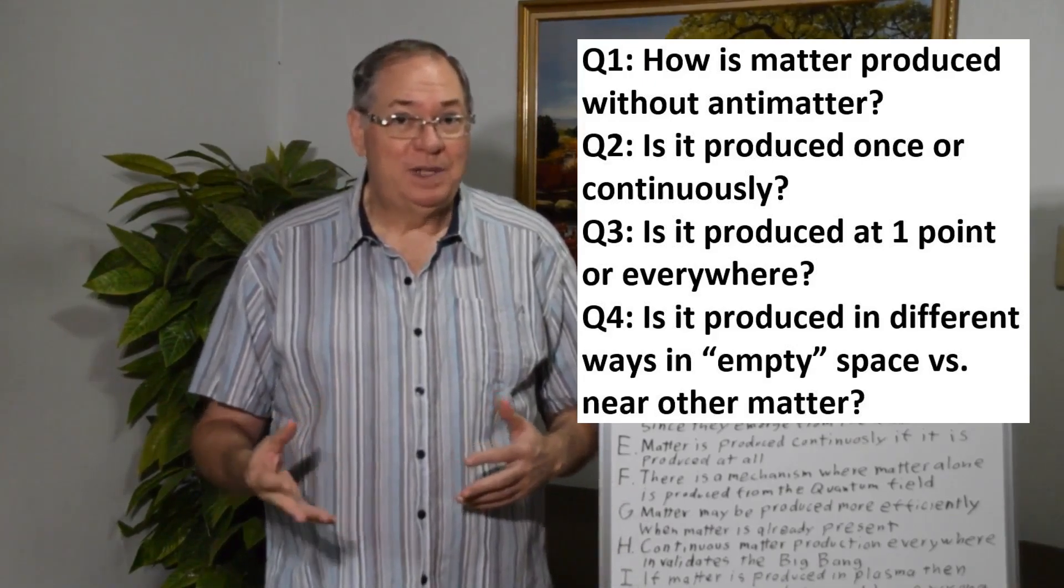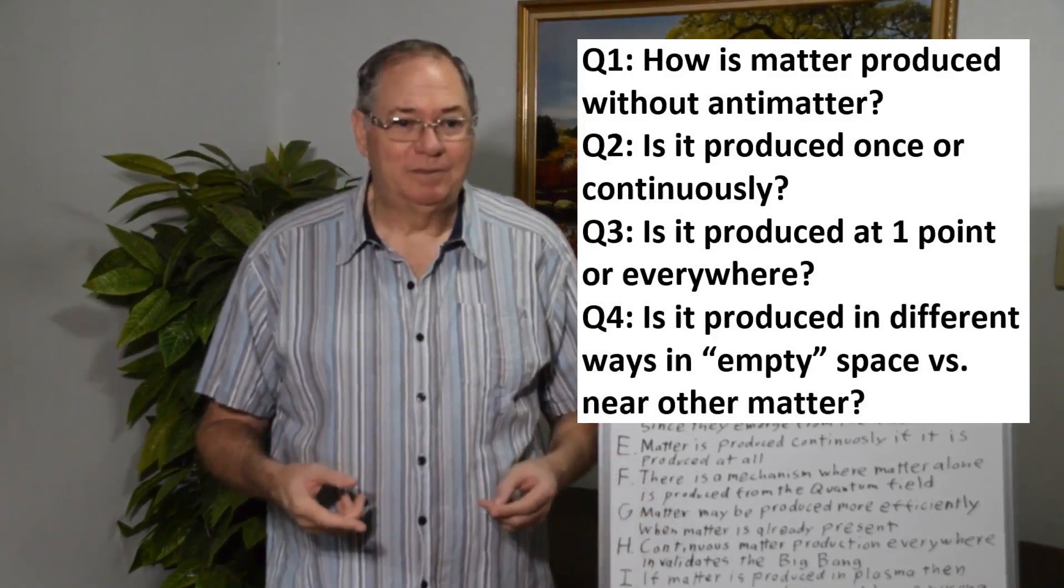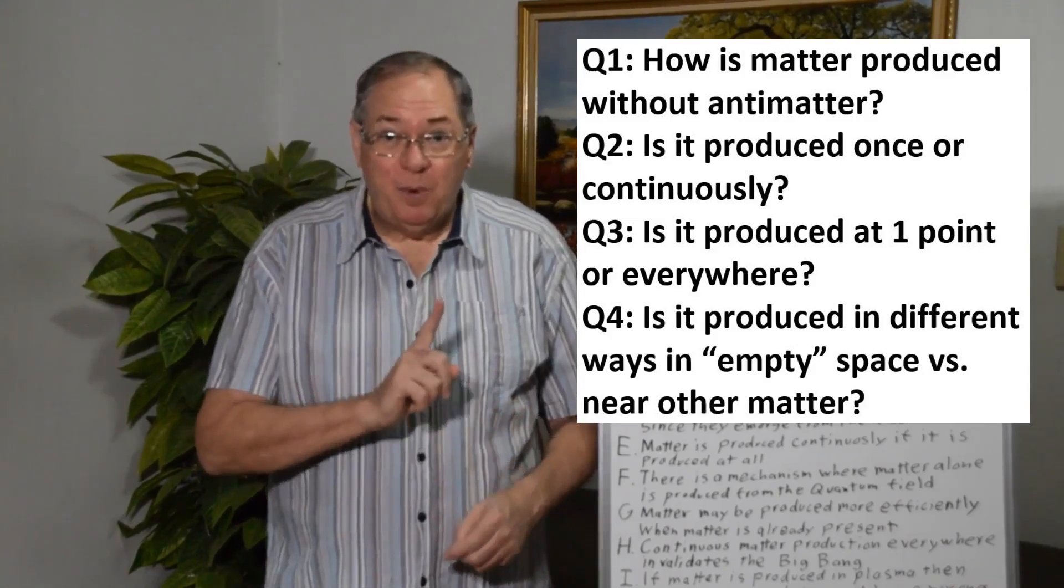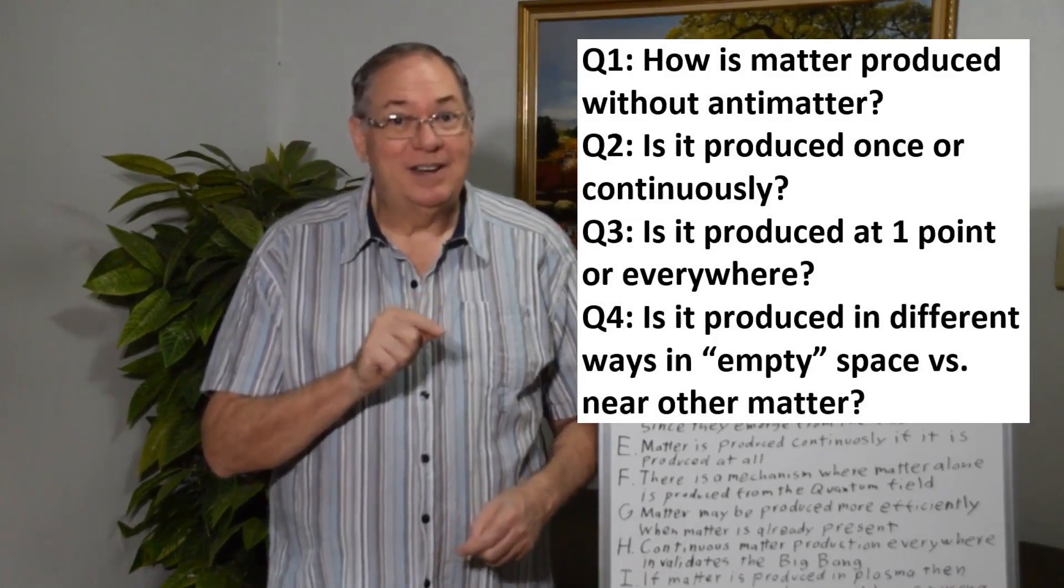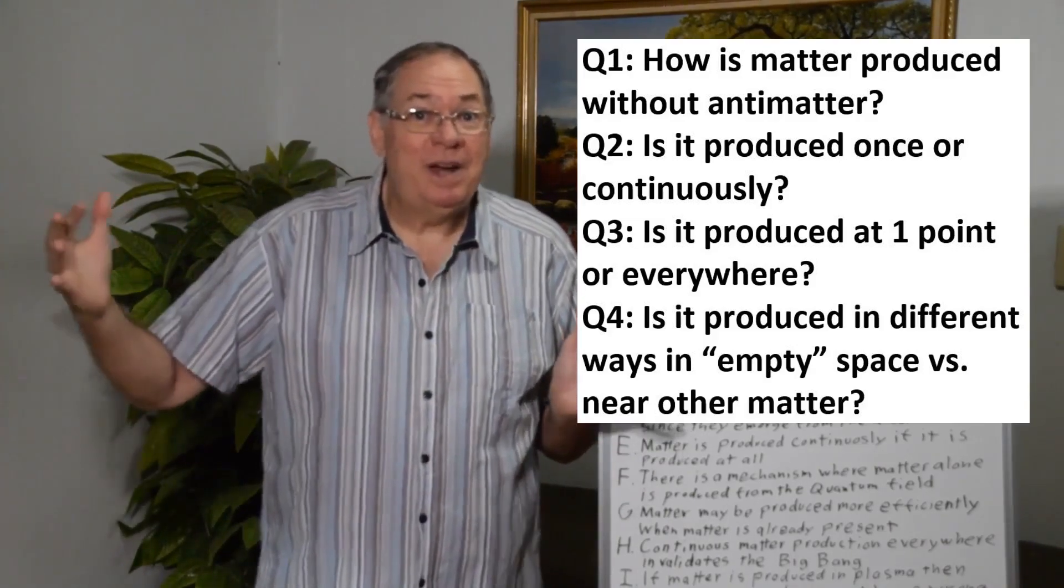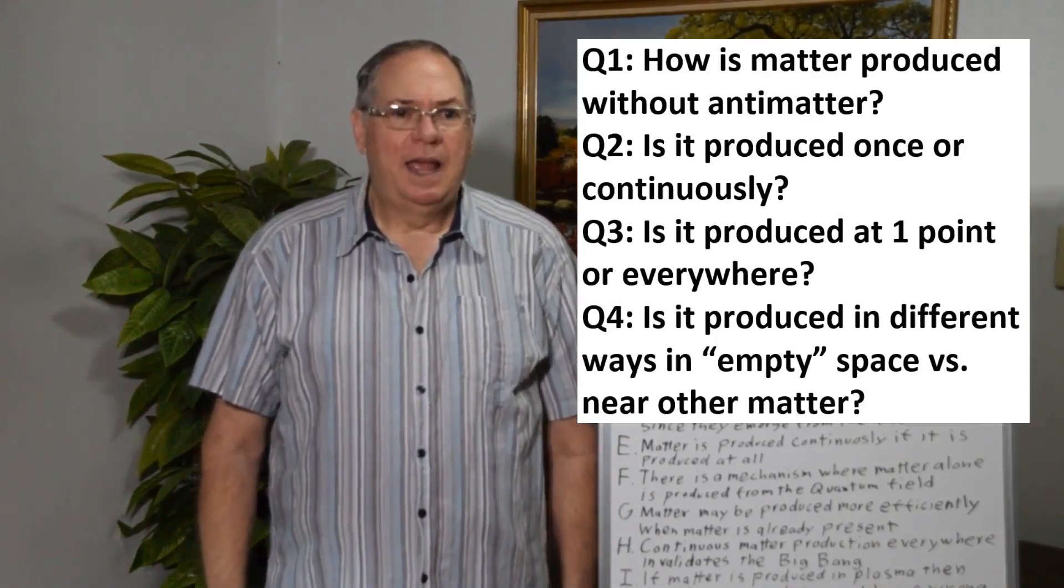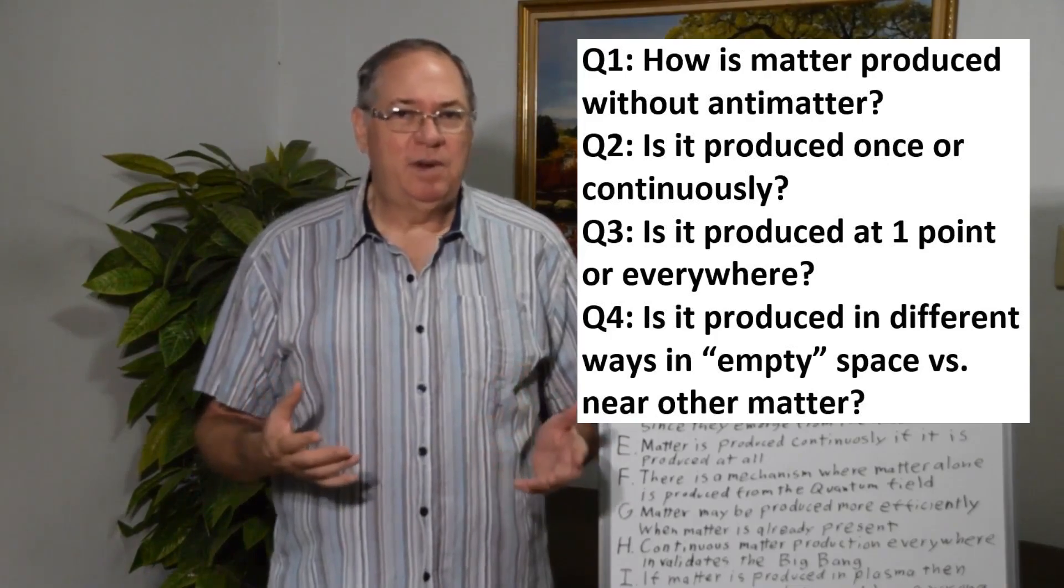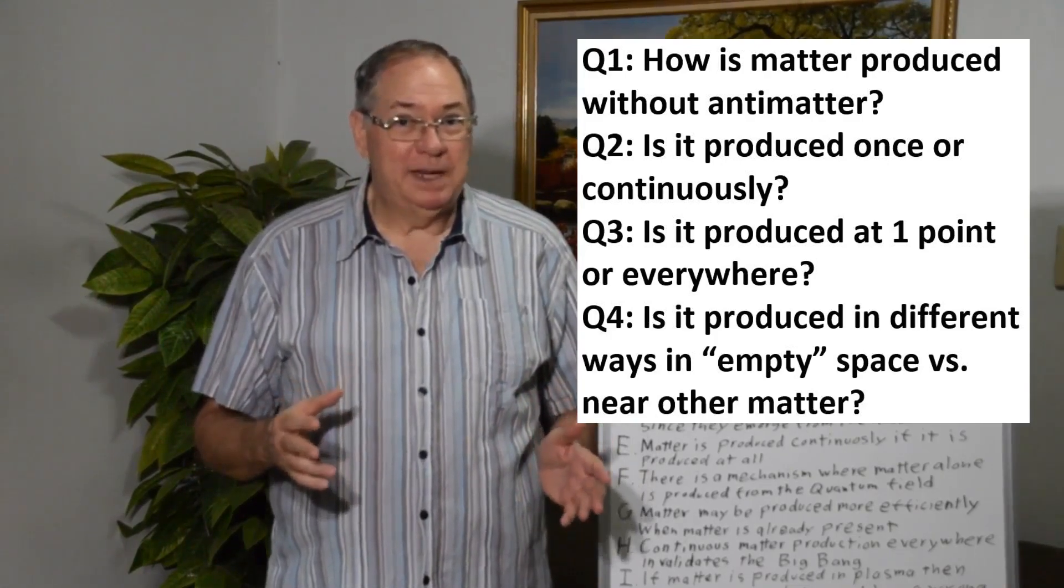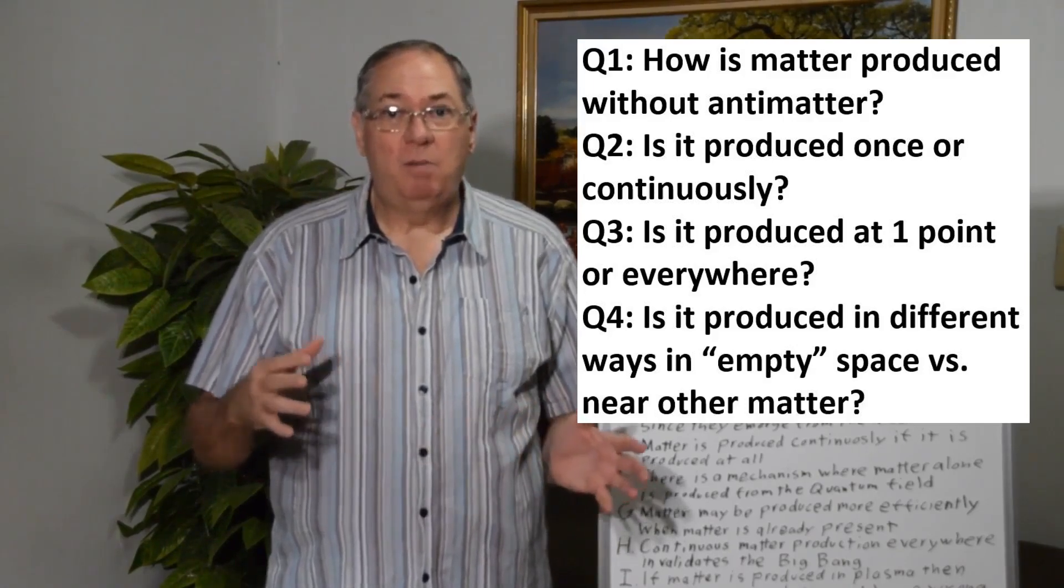Do the laws of physics always apply or were they different at some point? Is it produced at one point in the center of the Big Bang universe or everywhere all at once? And is it produced in different ways in so-called empty space versus when there's a whole bunch of matter around?